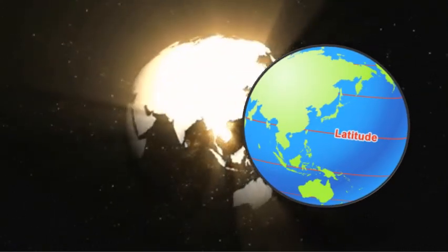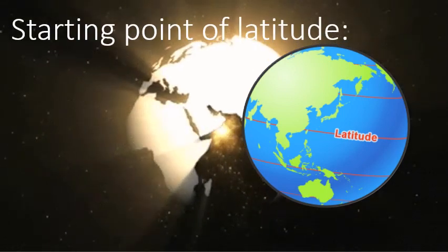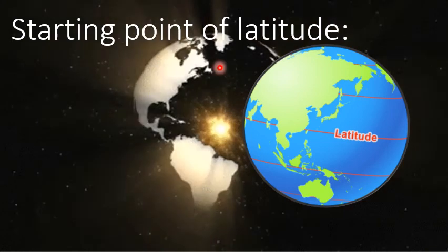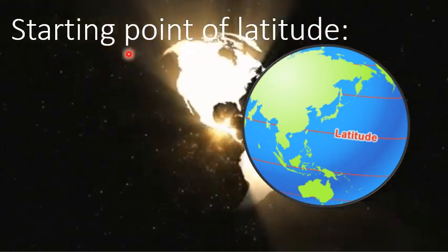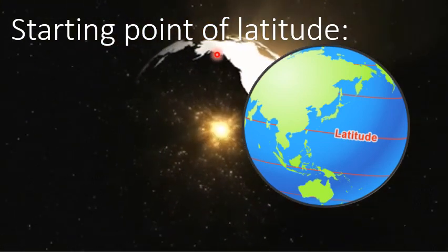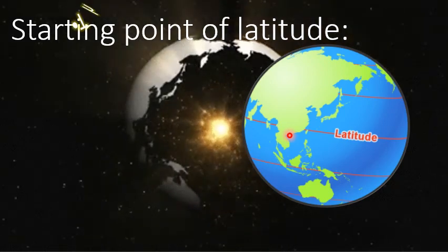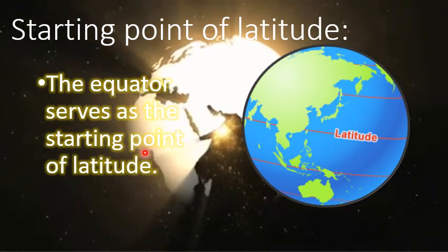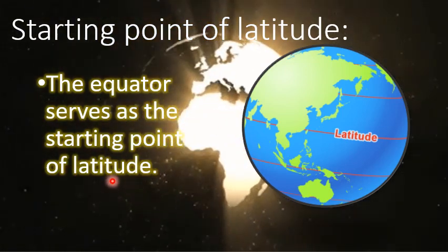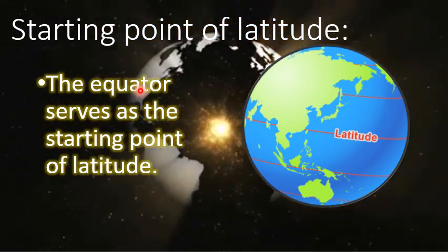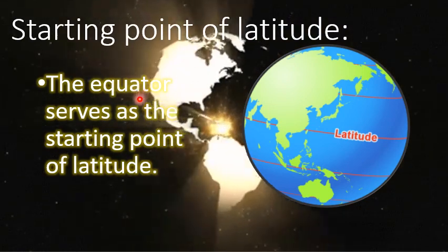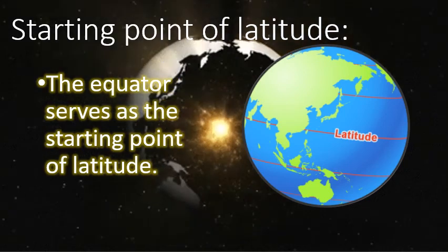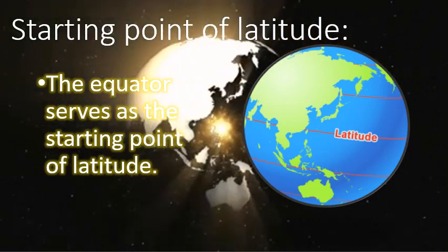The next topic is the starting point of latitude. The equator serves as the starting point for latitude because it is at zero degrees latitude and serves as the reference line for measuring all other lines of latitude.